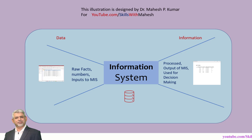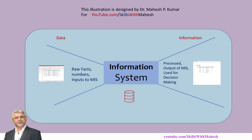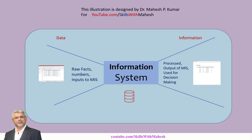Data is input to the system. Data is raw facts. We convert the raw facts into information, and information is the output of the system. Information is the processed one, and this processed information is actually used for decision making.